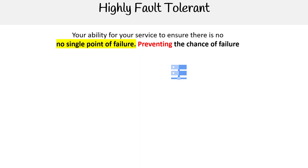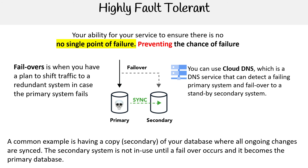Next, we have fault tolerance — your ability for your service to ensure there is no single point of failure, or preventing the chance of failure. It sounds very similar to high availability, but it's all about preventing the chance of failure. Imagine you have a database and the primary database fails. Your Cloud DNS at the domain level can say okay, fail over to the secondary instance. You have a redundant application running, you're syncing data over, it's a standby service ready to take over when the first one fails. So when something happens, we can fail over to it.